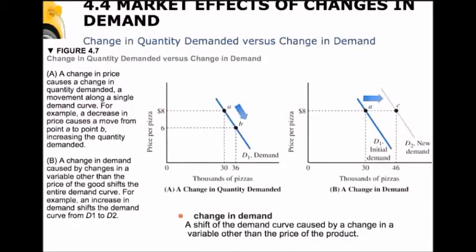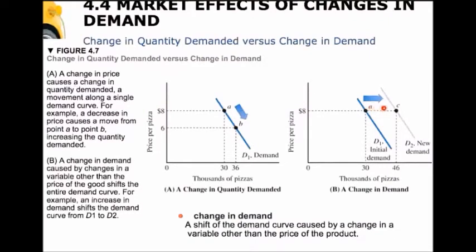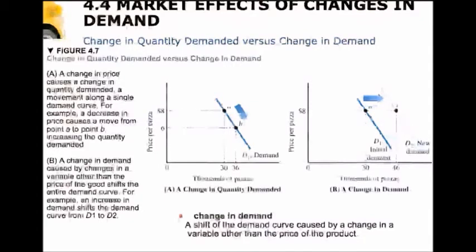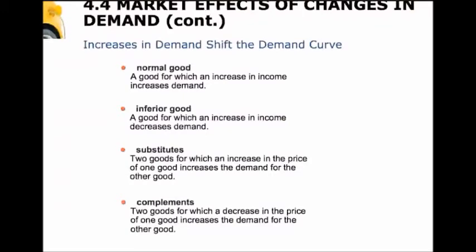Anytime one of the variables on the axes of a graph — and here we have the price of pizza and the quantity of pizza — if one of those variables changes, suppose there's a drop in the price from eight down to six dollars, we're going to have a movement along the demand curve, and that's a change in the quantity demanded. But if any of the other variables that affect demand change, you're going to have a shift, or a change in demand, and we'll see the demand curve actually shift instead of moving along it.